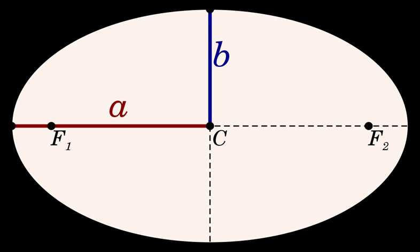In astronomy these extreme points are called absides. The semi-major axis a equals (r_max + r_min) / 2. The semi-minor axis of an ellipse is the geometric mean of these distances: b equals √(r_max · r_min).